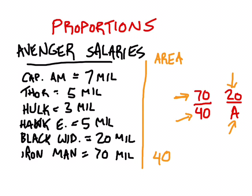You'll notice this first fraction, $70 million over 40 inches, is all for Iron Man. And the second fraction is all for Black Widow. So organization in the proportion is the most important thing. If you put things in the wrong place, you'll get the wrong answer.